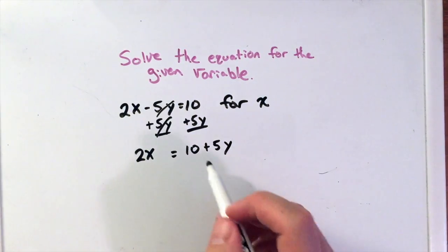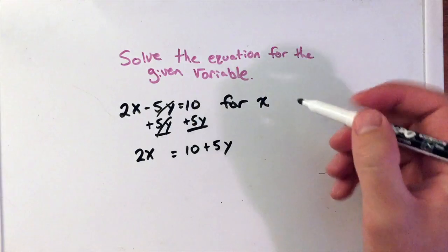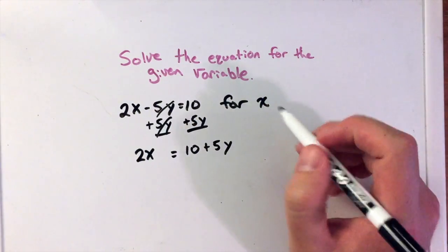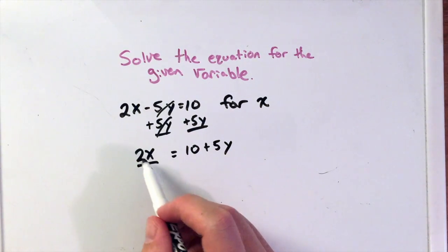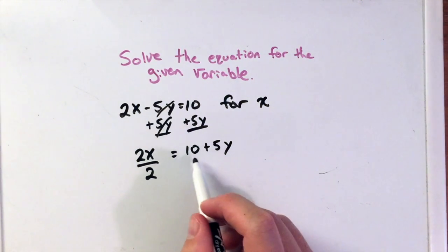So next, I have 2x equals 10 plus 5y, but I want to get x by itself. We're solving for x. So in doing so, I have to divide by 2 because I have multiplication here, 2x. So divide by 2, the opposite of that.